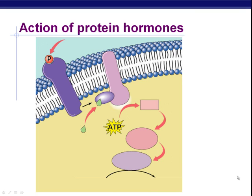This is the endocrine system part two. In part one, we generally introduced the endocrine system and ended with a focus on how lipid-based steroid hormones function to bring about changes in their target cells. This part begins with how protein-based hormones work — those hormones made out of protein — and how that's different.